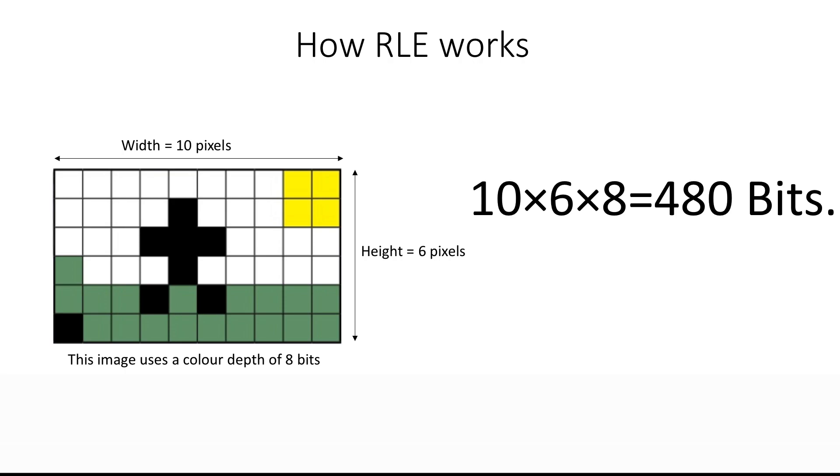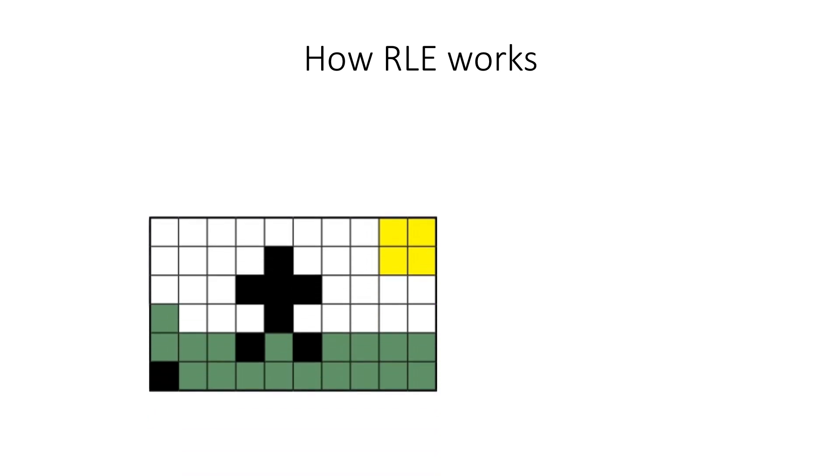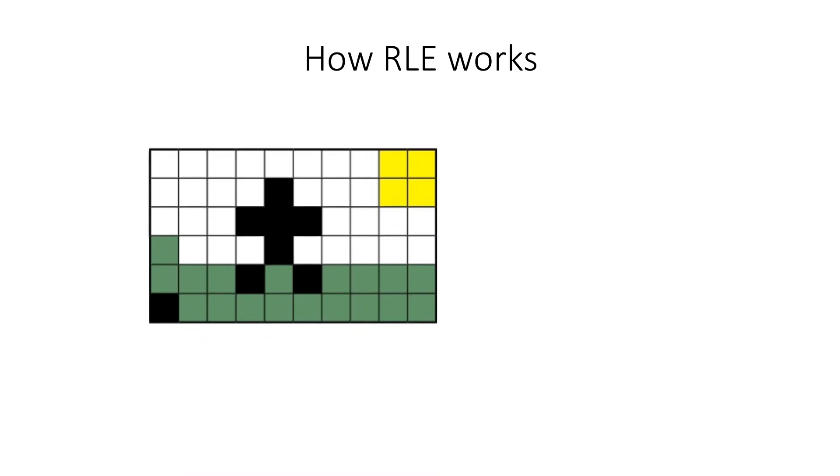That's quite a lot of bits that you would need. So if we look at this image in terms of RLE, how does that work? This image has lots of white pixels and then it's got yellow pixels.